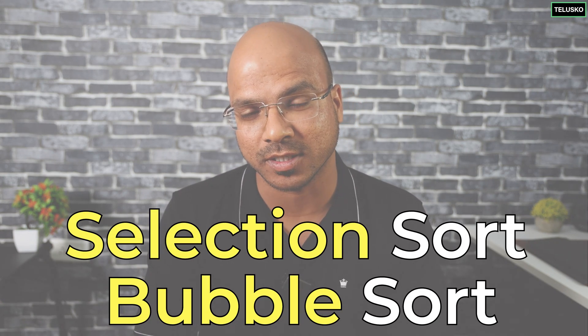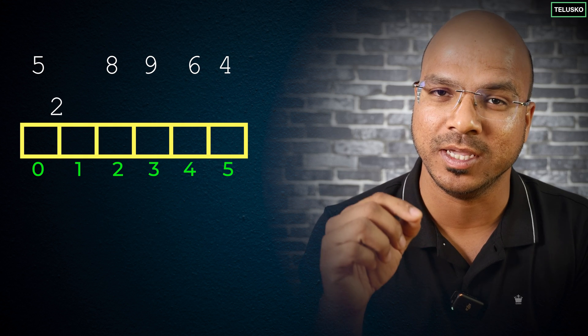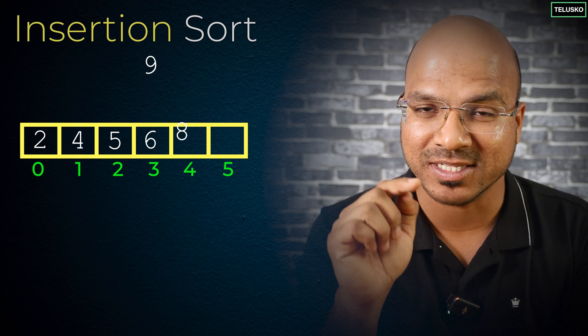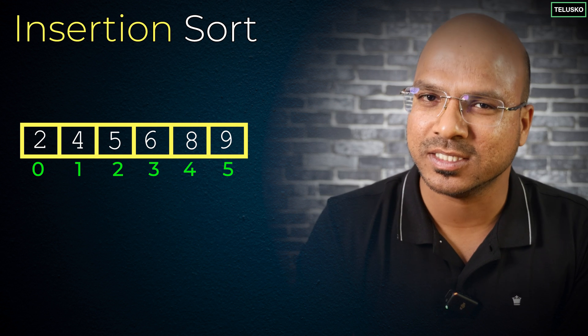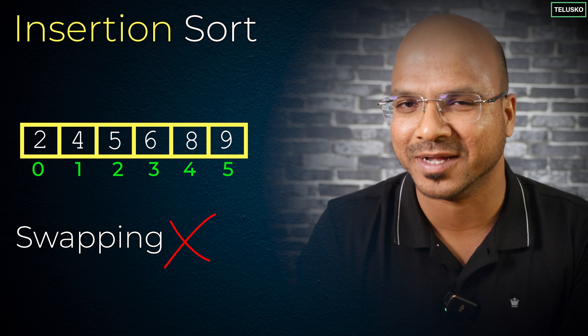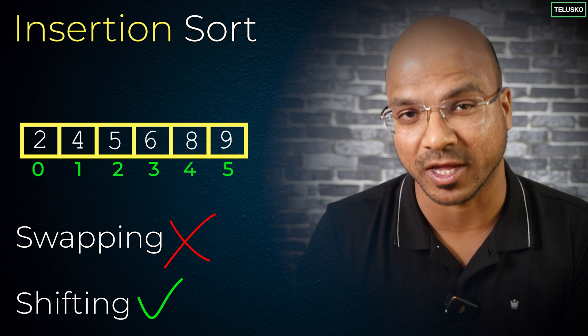We have talked about different sorting techniques, including bubble sort and selection sort. In this video we'll talk about insertion sort. What you do in this technique is basically take the elements and put them at the right position — that is your insertion. In this technique you don't normally do swapping; instead you use something called shifting.